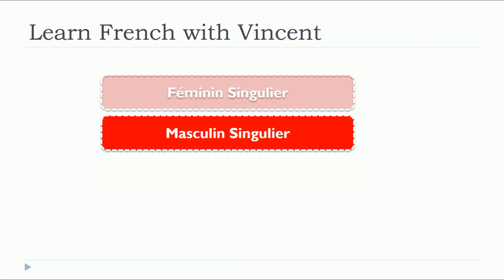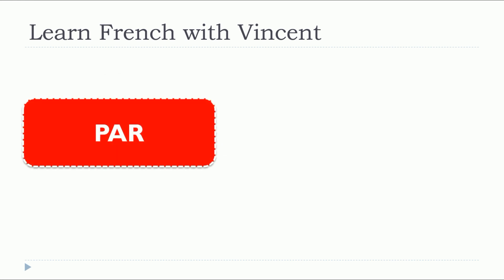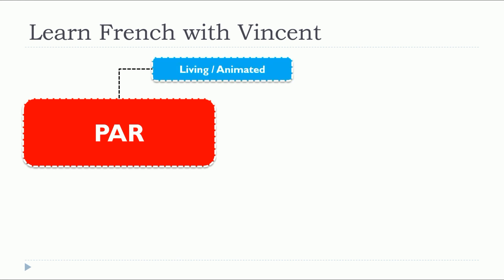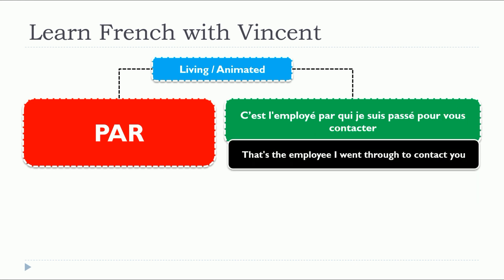Now let's have a look at masculin singulier. Same concept — the preposition is PAR. We start with the living and animated. C'est l'employé par qui je suis passé pour vous contacter. Not tricky at all. As I told you, the good news is that we use QUI whether for the feminine singular, masculine singular, feminine plural, and masculine plural — there will be only one form and it will be QUI.